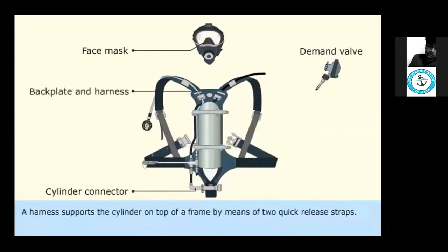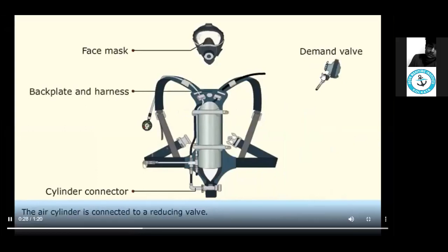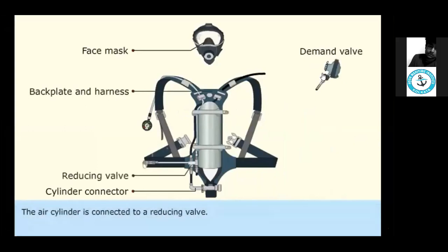A harness supports the cylinder on top of a frame by means of two quick-release straps. The air cylinder is connected to a reducing valve.